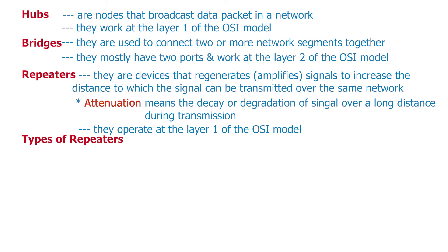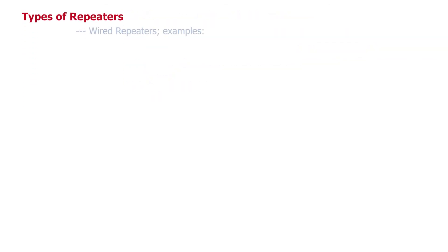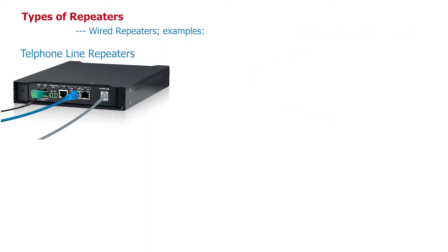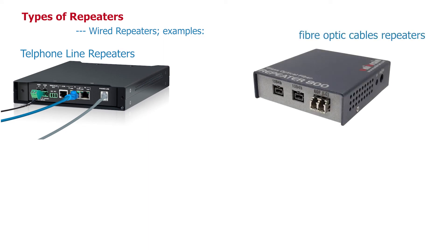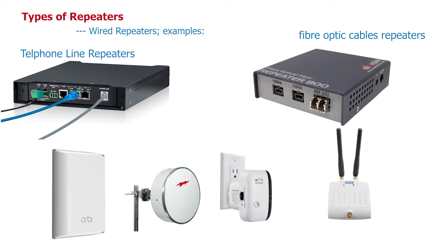Among all the other types, these are the ones we usually see in home and office networks. Examples of wired repeaters are telephone line repeaters, fiber optical cable repeaters, and many more. Examples of wireless repeaters are satellite repeaters, microwave repeaters, Wi-Fi repeaters, LTE repeaters, and so on.